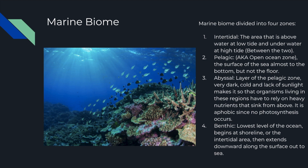What is the marine biome? The marine biome is divided into four zones. First, there is the intertidal zone — the area that is above water at low tide and underwater at high tide. The pelagic zone, also known as the open ocean zone, is the surface of the sea almost to the bottom but not the floor.